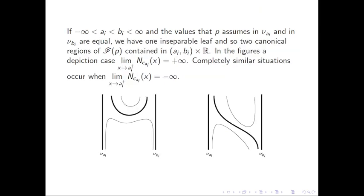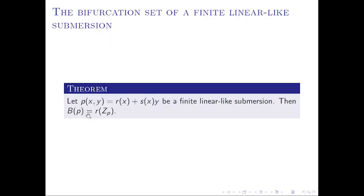The bifurcation set of a finite linear-like submersion P, denoted by BP, is equal to the values of r at each zero of s.